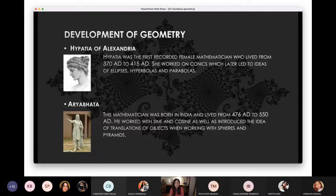Hypatia, she's a woman, and she is a woman who studied in a higher level of geometry that has to do with conics, hyperbolas, ellipses, and parabolas. Aryabhata, he's from India. This guy has to do work with cosine and sine, and introduced some ideas that translate from spheres and pyramids.